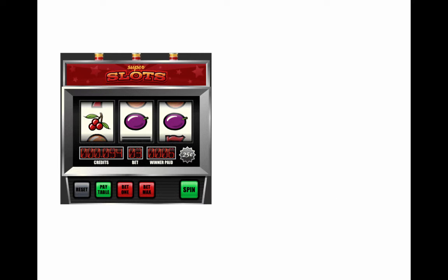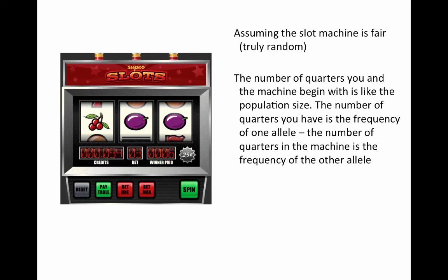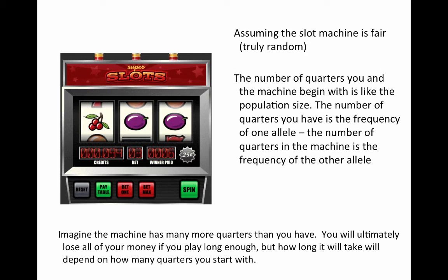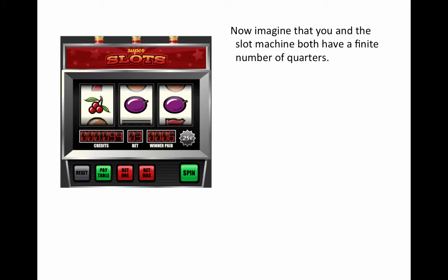To illustrate why, let's think about playing a slot machine. Assume it's fair, giving completely random results. The number of quarters you and the machine have to begin with is like the population size. The number of quarters you have is the frequency of one allele; the number of quarters in the machine is the frequency of the other allele. As you sit there and play, you're ultimately going to lose all your money if you play long enough, but how long it takes depends on how many quarters you start with.